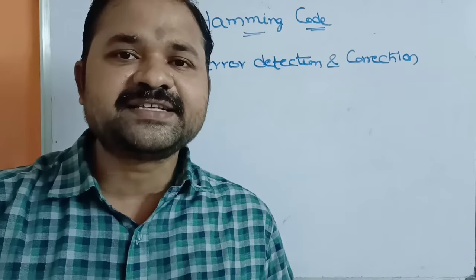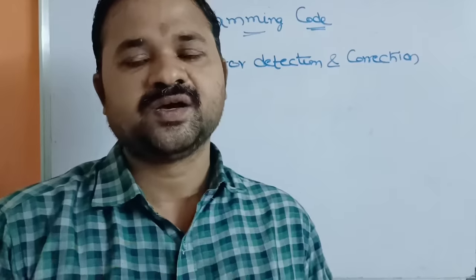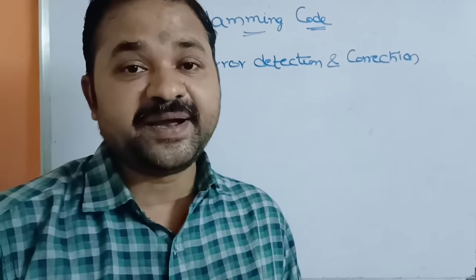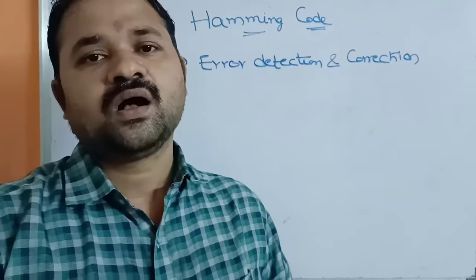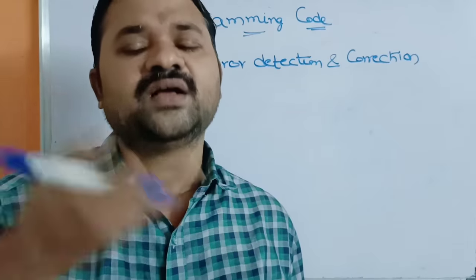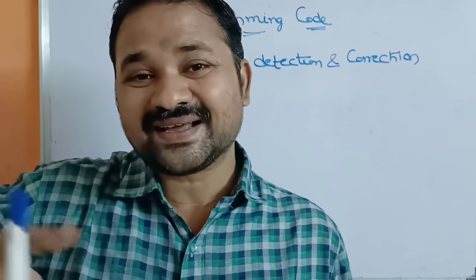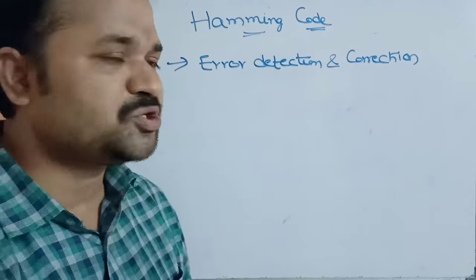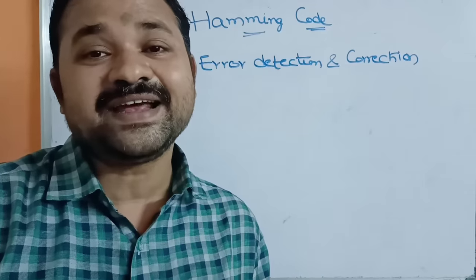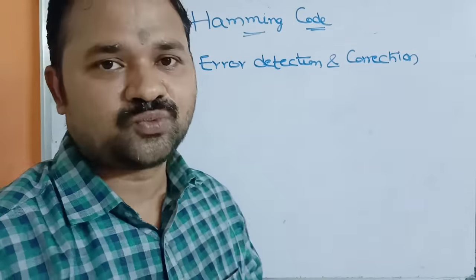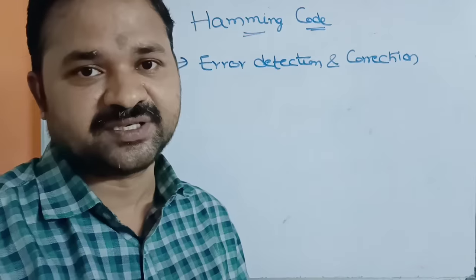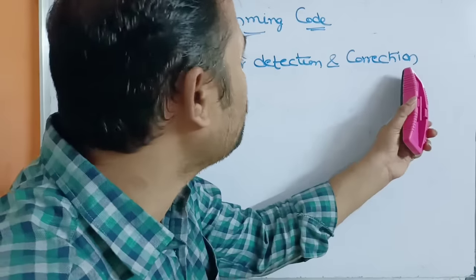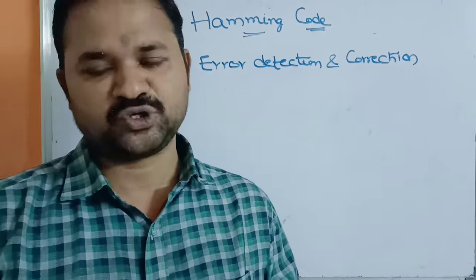Generally, we know that a sender sends a message to the receiver. There is a possibility that some of the bits in the message may be lost or changed — some zeros will be converted to ones and ones will be converted to zeros. In that case, the receiver can detect the error with the help of the Hamming code approach, and can also correct it — identifying in which position the error was produced.